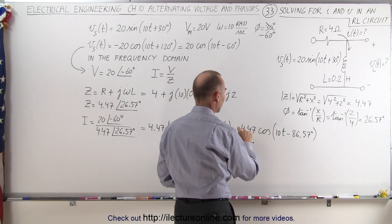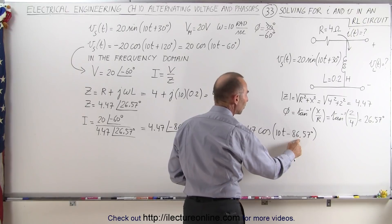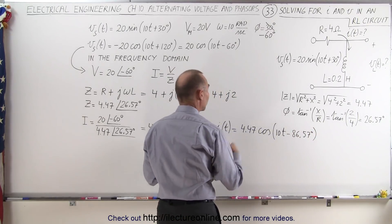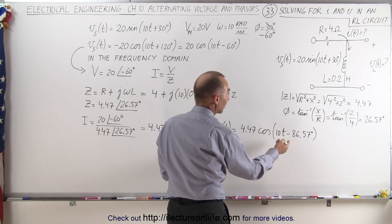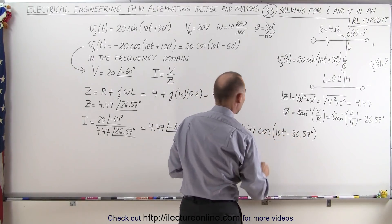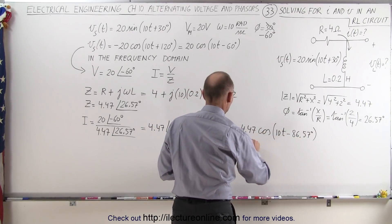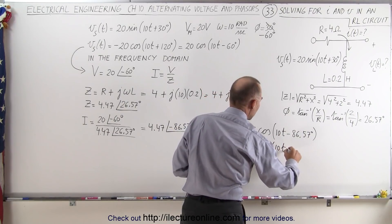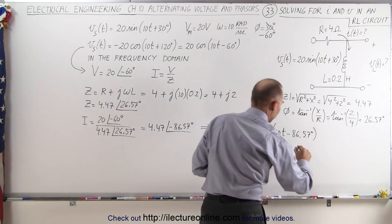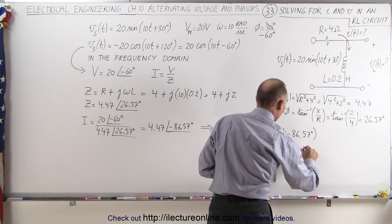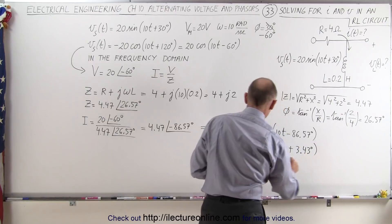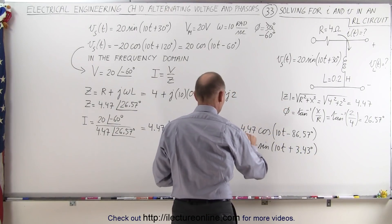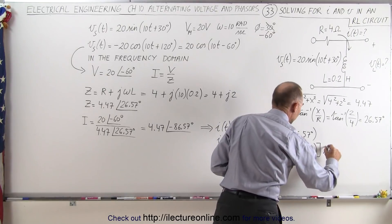From the cosine to the sine, we put a negative in front, subtract 90 degrees, but then get rid of the negative by adding 180 degrees — so in essence, to go from cosine to sine we just add 90 degrees. This becomes 4.47 times the sine of 10t plus 3.43 degrees. This is the current as a function of time, in amps.